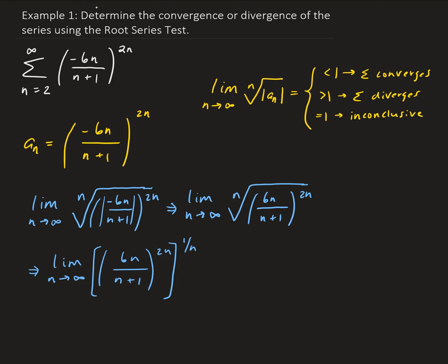All right, so from here, 1 over n and n will cancel out. So that's going to leave us with the limit as n approaches infinity of 6n over n plus 1 to the power of 2.